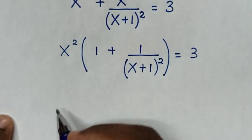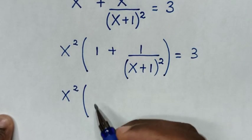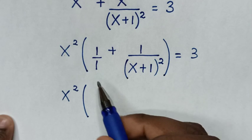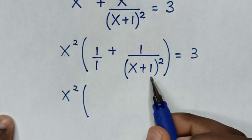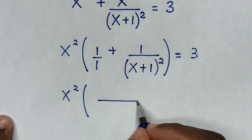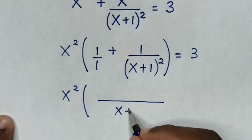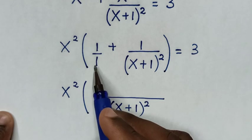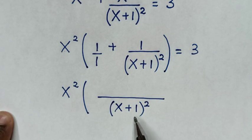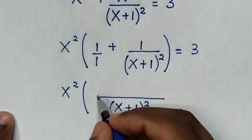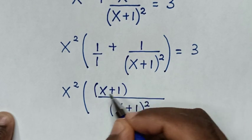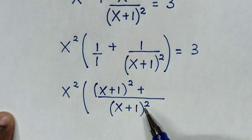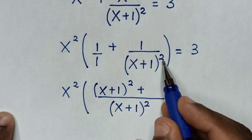In the next step, our equation will be x squared bracket. Then 1 is the same as 1 over 1, and the denominator of 1 and (x plus 1) squared gives us over (x plus 1) squared. Then (x plus 1) squared divided by 1 is (x plus 1) squared, times 1 is this, so it will be (x plus 1) squared, plus (x plus 1) squared divided by (x plus 1) squared is 1.